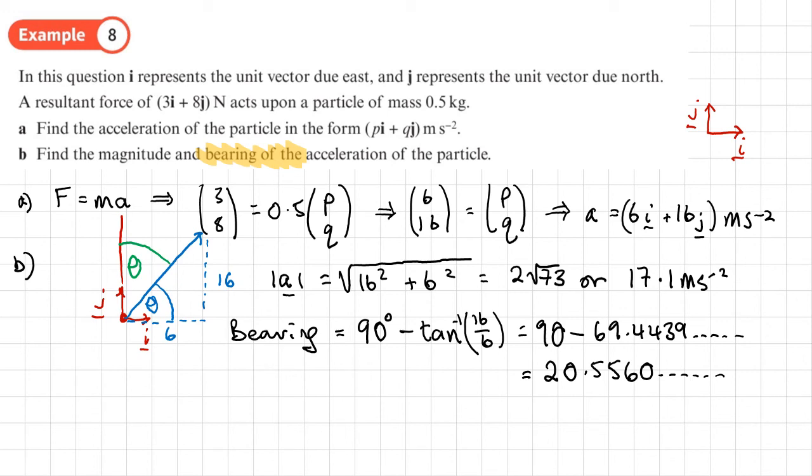Remember, we write bearings as three figures, and also we'll probably want to either write this to three significant figures or to one decimal place. So we can give our bearing as either 021 degrees if we write it as a whole number.